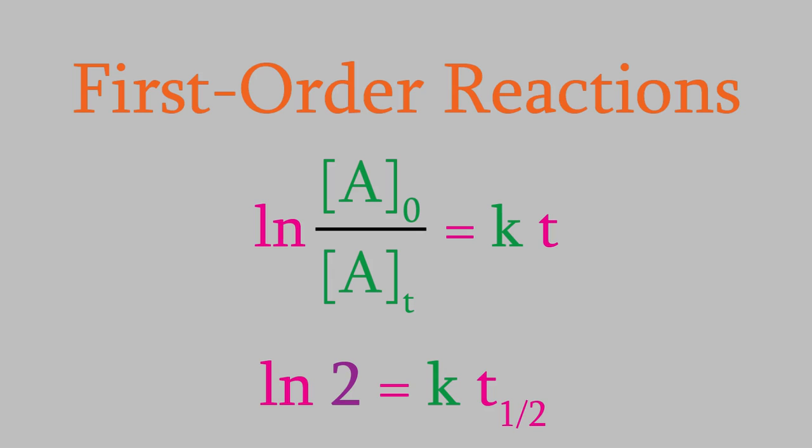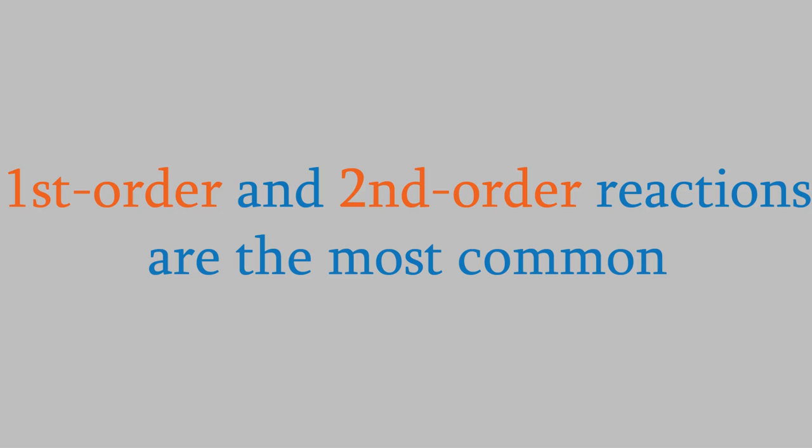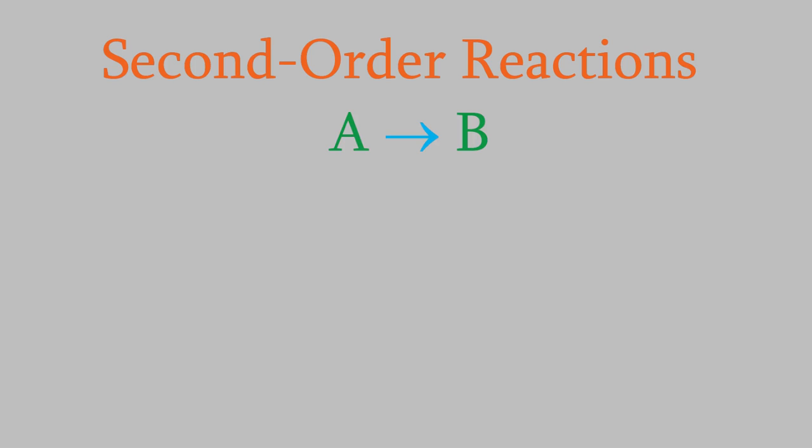Today, I want to tell you about second order reactions. As I mentioned in the last video, first and second order reactions are by far the most common, so once you know about those two, you'll have some powerful tools that you can use in your own research. So let's talk about second order reactions. These are very common in nature. Suppose we have this simple second order reaction — we start with one reactant and get one product. What will be the rate law for this reaction?